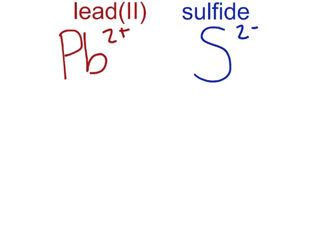As we can see here, we have exactly enough positive charge to balance the negative charge. So the formula for lead(II) sulfide would be PbS.